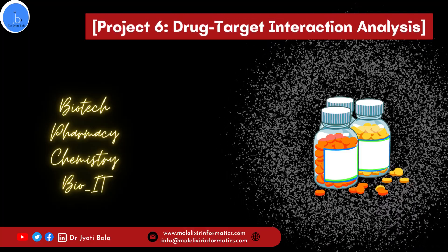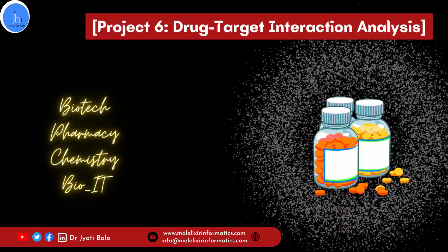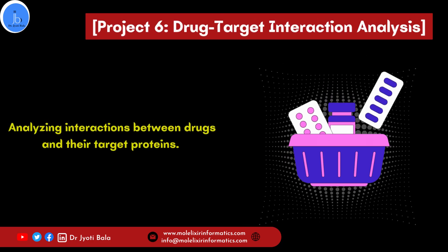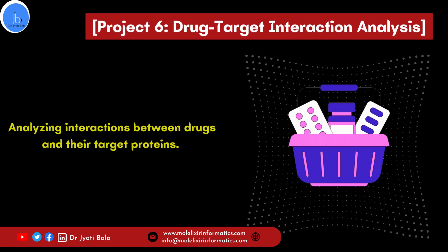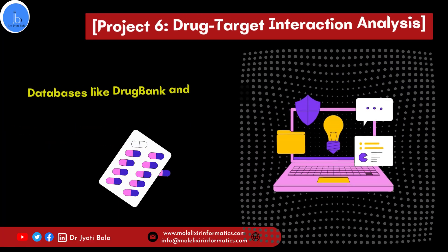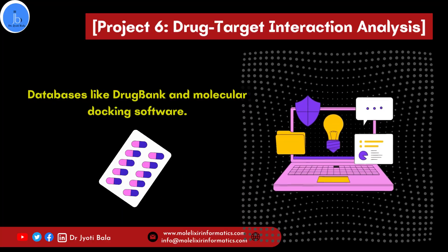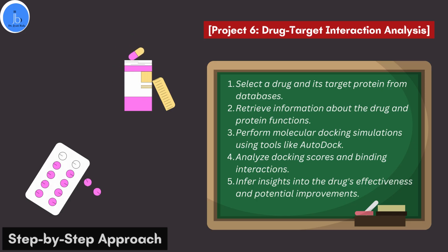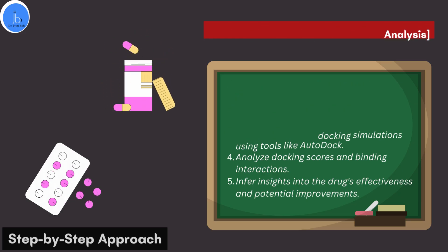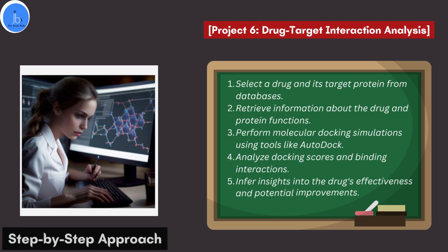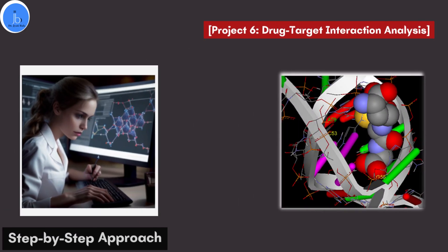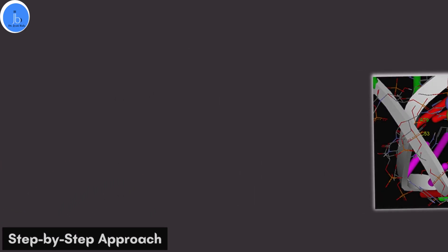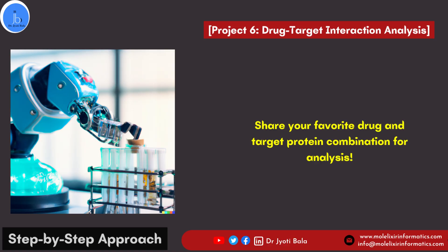The sixth project is drug-target interaction analysis. This can be done by chemists, pharmacists, biologists, and bioinformatics students and researchers. You can analyze the interaction between drugs and their target proteins. This project aids in drug discovery and understanding the mechanism of action. You will need access to databases like DrugBank and molecular docking software. Select a drug and its target protein from databases, retrieve information about the drug and protein function, then perform molecular docking using tools like AutoDock or HEX Dock. Analyze the docking results, scores, and binding interactions. You can also perform pharmacokinetics and toxicity predictions.